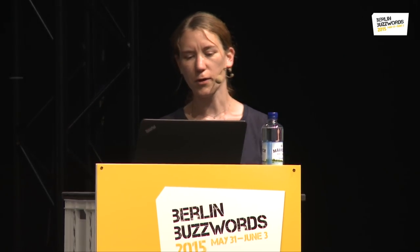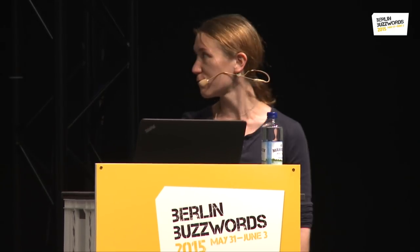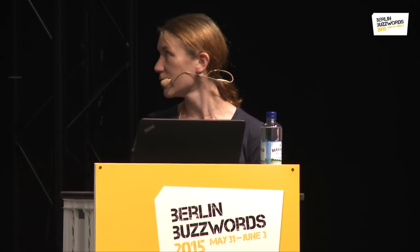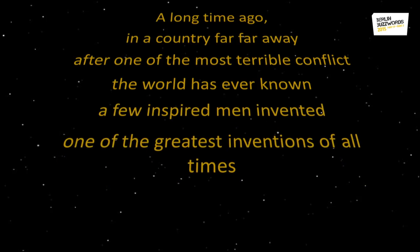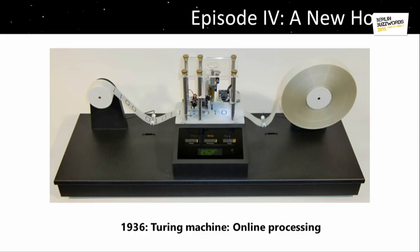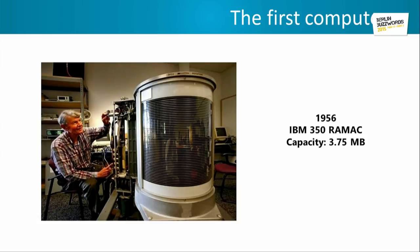So a long time ago, in a country far, far away, after one of the most terrible conflicts the world has ever known, a few inspired men invented one of the greatest inventions of all time: the Turing machine. Actually it wasn't really built. But anyway, a few years later some guys came up with the first computer, and by '56 they were able to store three megabytes in big machines like that — kind of cool.